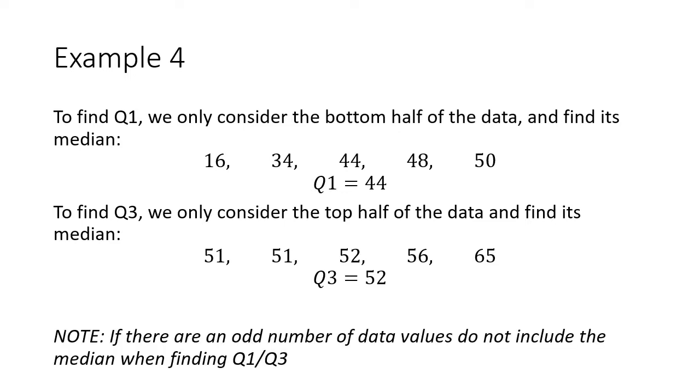Just a quick note. If we had an exact median, if we didn't have to average those two like we did, if we didn't have to average 50 and 51, when you find the Q1 and Q3, you ignore that median value. It is the exact middle. You leave it out when you compare the top half and the bottom half.